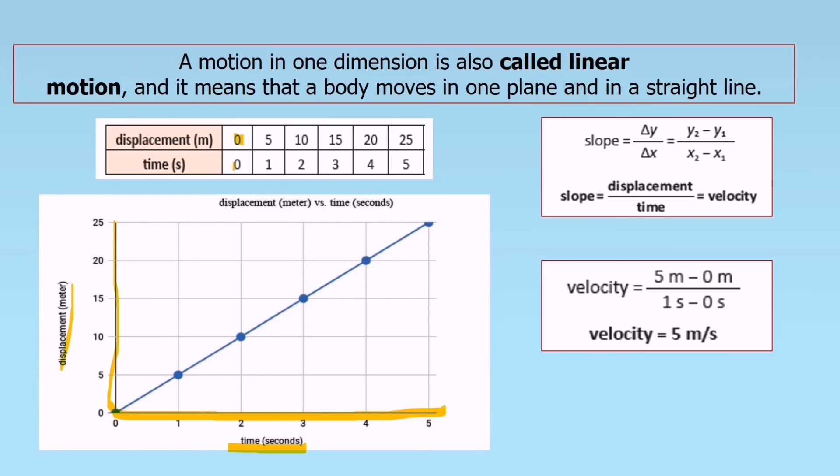We are going to plot. Zero, zero, so here. Next, displacement is 5 and 1 in time. Next, you are going to plot and then draw a line. That is linear motion.